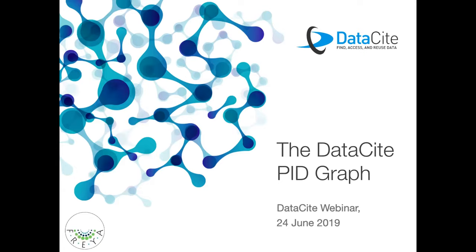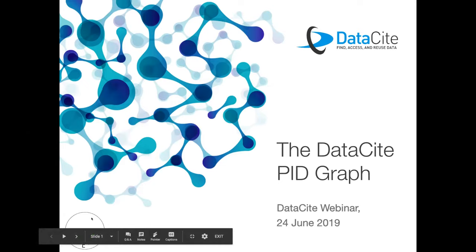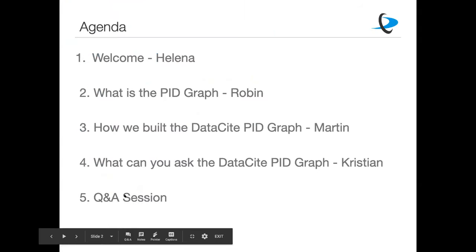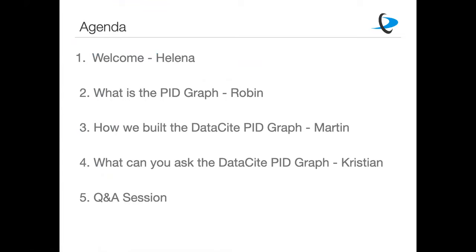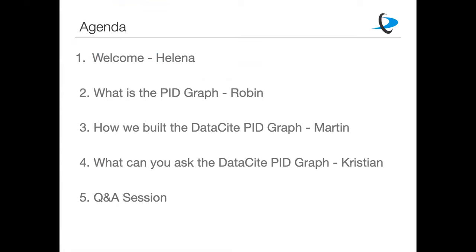So today we're talking about the DataCite PID Graph, which we developed as part of the European project FREA. Looking at the agenda: first, Robin will tell you about the concept behind the PID Graph — what it actually is. Then Martin will talk about how we built the DataCite PID Graph. And Christian will tell you about the kinds of questions you can ask the PID Graph. And then we'll have time for a Q&A session. So, Robin, over to you.